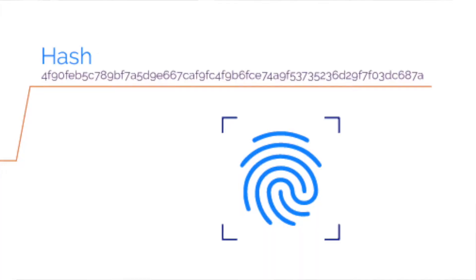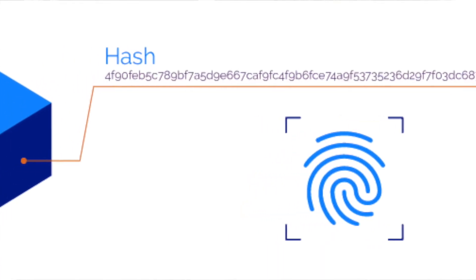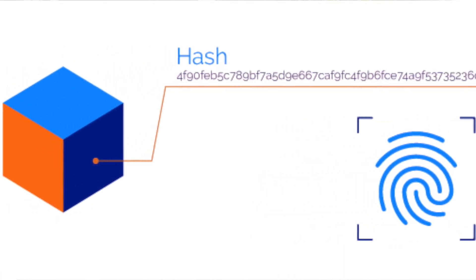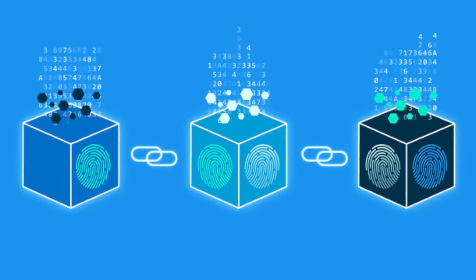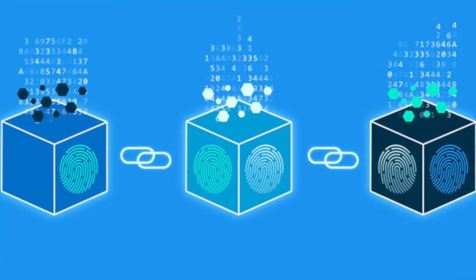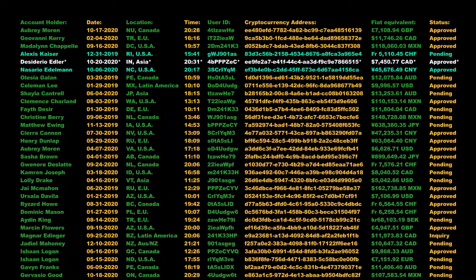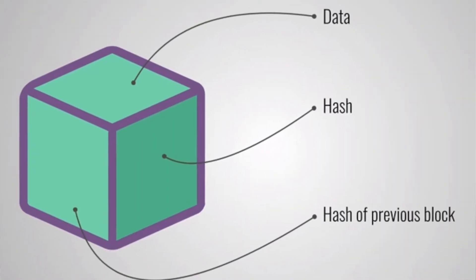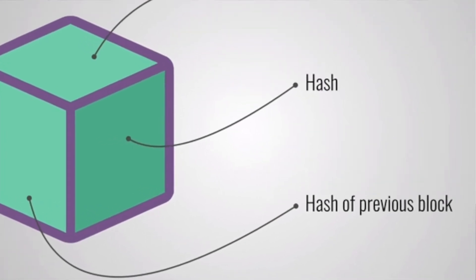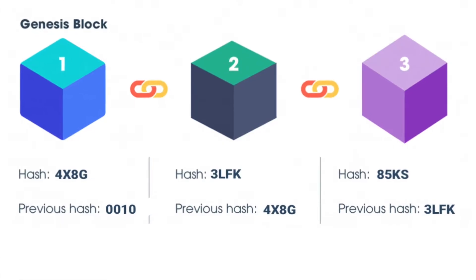In addition to the data being stored, each block also has what is called a hash. A hash can be compared to a digital thumbprint because it's a unique identifier that represents all the information contained within each block. A unique hash is calculated each time a new block is created, and if any of the information in the block is changed, that hash changes as well. This makes it easy to identify if a block has been tampered with.